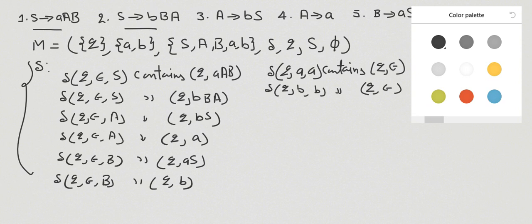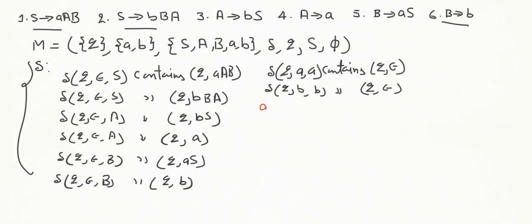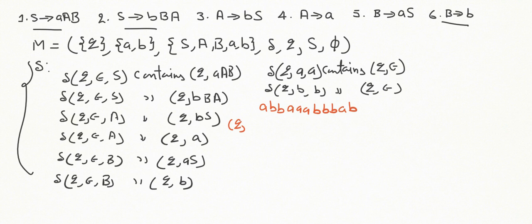The string to process is: a b b b a a a a b b b b b a b b b a b. The instantaneous description (ID) is a three-tuple: the first element is the state, the second is the portion of the input string yet to be read, and the third is the content of the pushdown store. Initially, the state is Q, the entire input is to be read, and the initial stack content is the start symbol S.